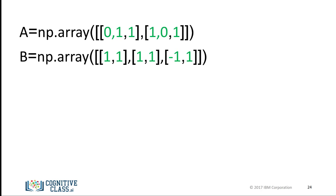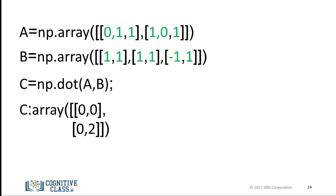In NumPy, we can define the NumPy arrays A and B. We can perform matrix multiplication and assign it to array C. The result is the array C, which corresponds to the matrix multiplication of arrays A and B. There is a lot more you can do with NumPy — check out numpy.org.